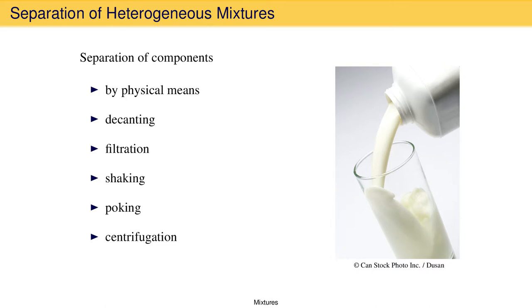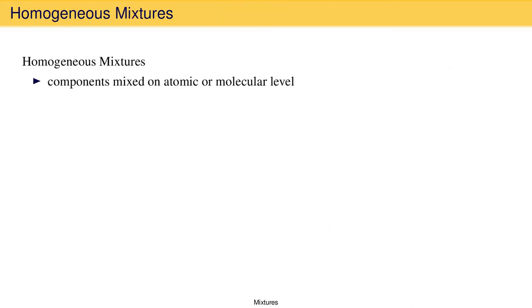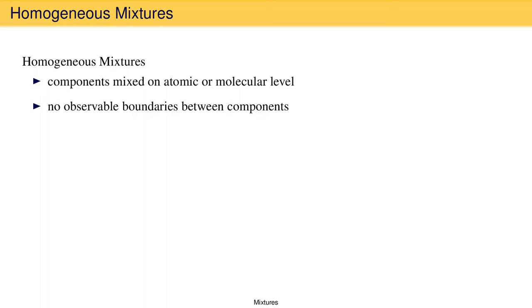Homogeneous mixtures, which we have not talked about yet, are quite different. In homogeneous mixtures, the components are mixed on the atomic or molecular level, which means that it is impossible to see boundaries between the components. Because of this, a homogeneous mixture has the same composition in every part of the mixture.